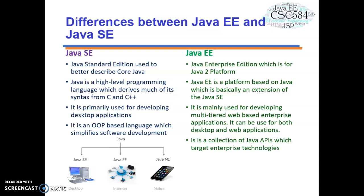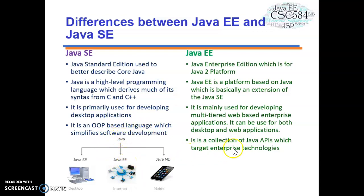Java SE is primarily used for developing desktop and web-based applications. It can be used for both desktop and web applications. SE is an OOP-based language which simplifies software development, whereas in EE we use many collections of Java APIs which target enterprise technologies.